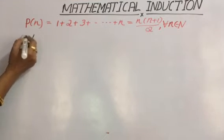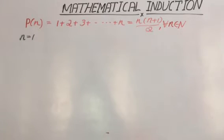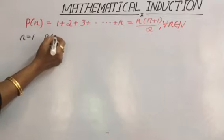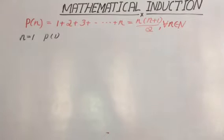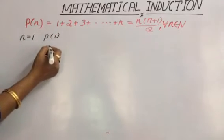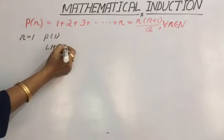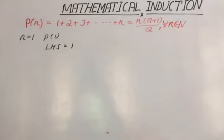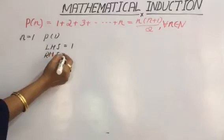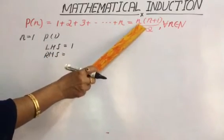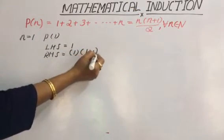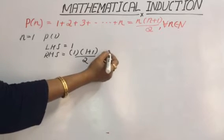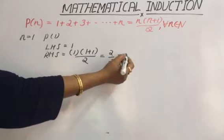Let us move on to the solution. Put n equal to 1. If we put n equal to 1 in the given proposition, that becomes P of 1. This indicates there will be only one term in the expansion — the first term itself. So the LHS of the expression becomes 1. Now, if we replace n by 1 on the RHS, we get RHS equal to 1 times (1 plus 1) by 2, which is 2 by 2, that is equal to 1.